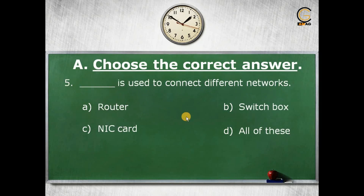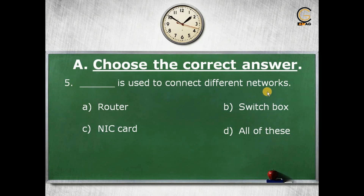The next MCQ: dash is used to connect different networks. The options are: a) router, b) switchbox, c) IC card, d) all of these. The correct answer is a) router, as for connecting different networks together we always use the router.